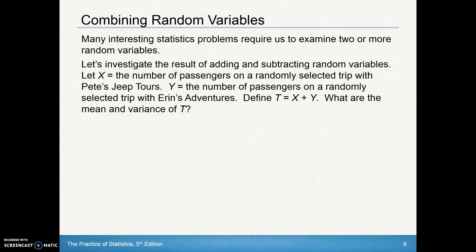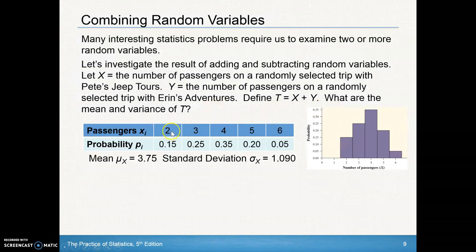Hello and welcome back to Chapter 6, Section 2, Day 2. Today we're going to be looking at combining random variables, as many interesting statistics problems require us to examine two or more random variables. We're going to revisit Pete's Jeep Tours. He had a minimum of two passengers and a maximum of six. The mean number of passengers he has is 3.75 and the standard deviation is 1.090.